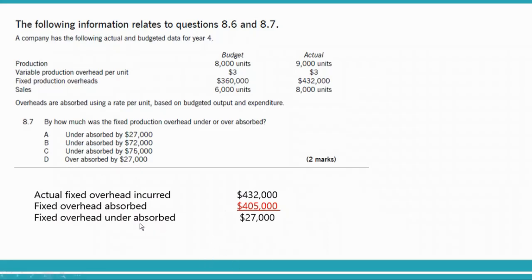Because the absorbed overheads ($405,000) are less than the actual overheads ($432,000), this is a case of under absorption — you absorbed less than what was actually incurred. The answer is option A: under absorbed by $27,000.